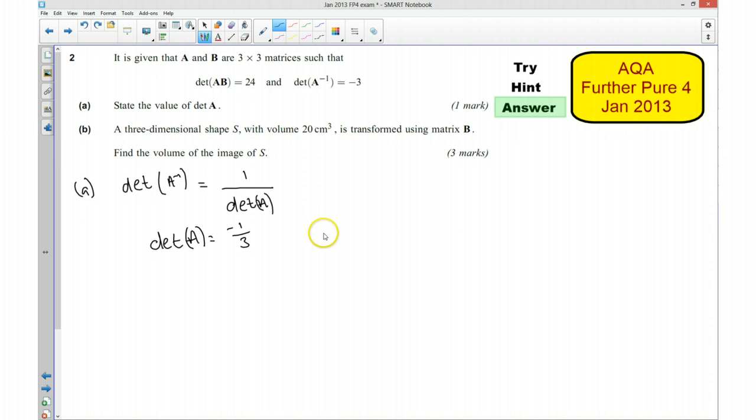And that makes sense because if I undid it and it gave me a scale factor of negative 3 for the volume, then applying that transformation must have been a scale factor of minus a third. Okay, part B. We've got a three-dimensional shape S with volume 20 cm³ and it's transformed using matrix B.